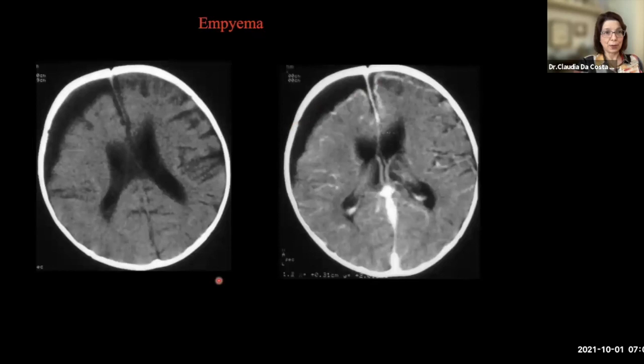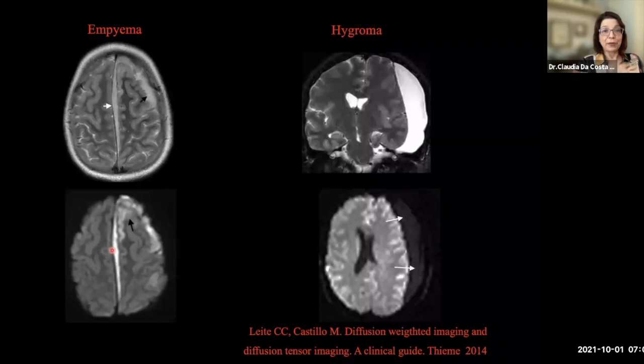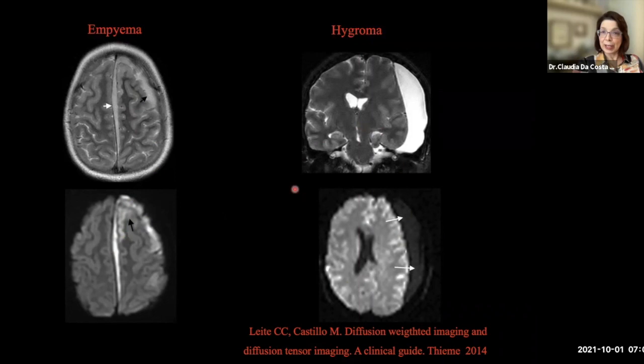Only to show the differences: this is a patient with two collections, one parasagittal, the other frontal. The collections on diffusion-weighted imaging present hyperintensity due to the presence of pus. Pus is a very viscous material and restricts the diffusion of water molecules, as well as showing compromise of the parenchyma — this is an encephalitis, actually a meningoencephalitis with subdural collections. On the other hand, we can see subdural collections with the same signal intensity as the CSF and without enhancement — these are hygromas.